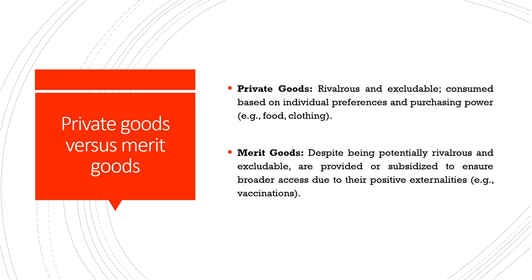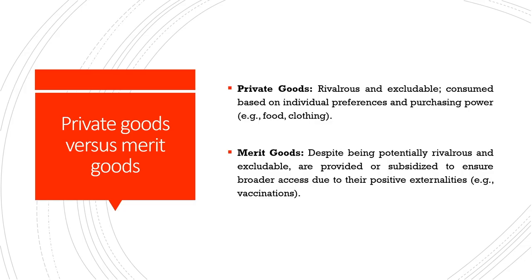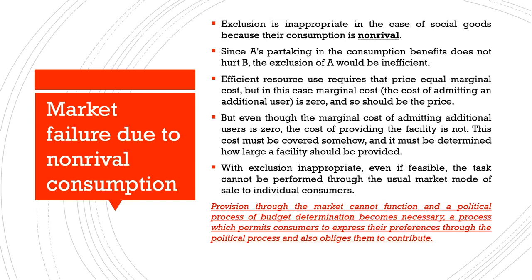So far in this lesson we have learnt about public goods, private goods, and merit goods, and their distinguishing characteristics. Because of the two defining characteristics — rival or non-rival consumption, and excludable or non-excludable — we often face market failure and externalities. There can be two important reasons for market failure: the first is market failure due to non-rival consumption, and the second is market failure due to non-excludability.